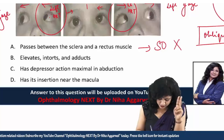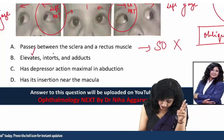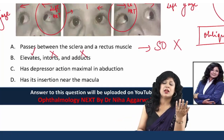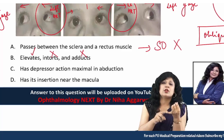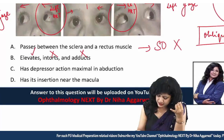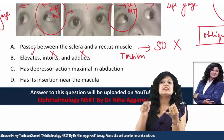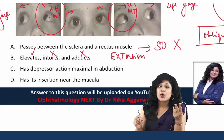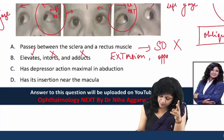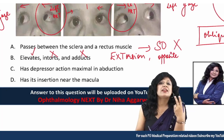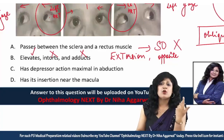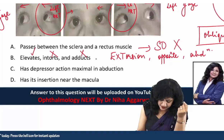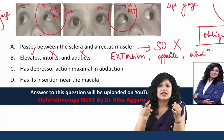Option two states: this muscle elevates — yes, correct; intorts — wrong; and adducts — also wrong. The actions of the inferior oblique: it is an oblique muscle, so the main action is torsion. Since inferiors are extortors, the main action is extorsion. Then, obliques go opposite — so the oblique abducts. Therefore, option two is not the inferior oblique.